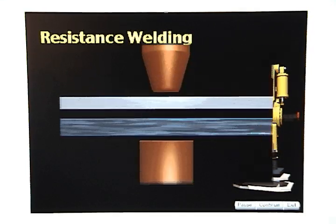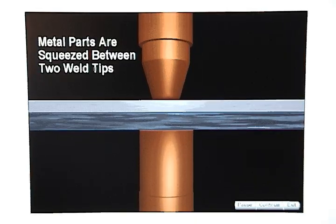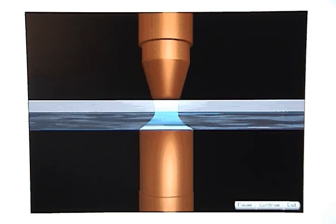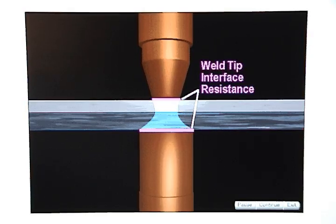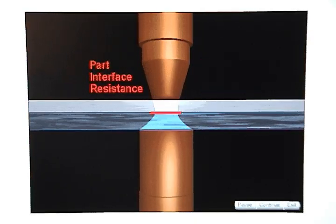Resistance welding is a process where metal parts are squeezed between two weld tips. Current flows between the weld tips and encounters resistance at the weld tip interface and at the part interface.